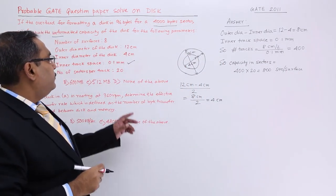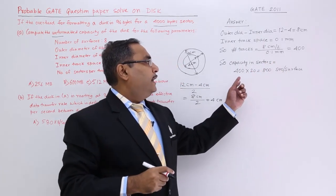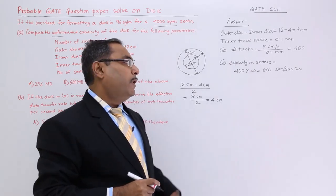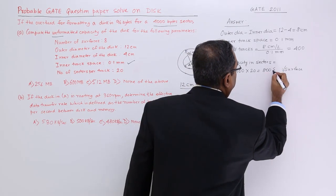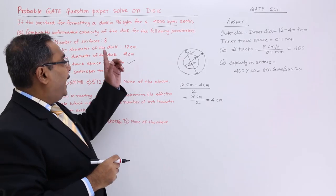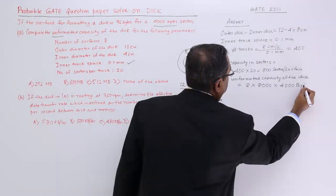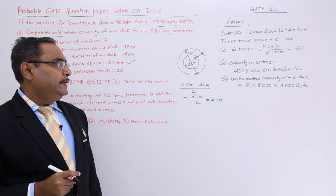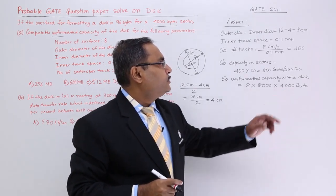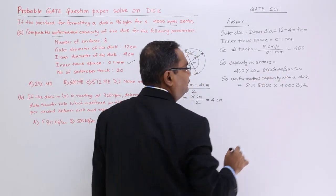It is given that the number of sectors per track is 20. So: number of sectors per surface = 400 tracks × 20 sectors per track = 8000 sectors per surface. The unformatted capacity of the disk = 8 surfaces × 8000 sectors per surface × 4000 bytes per sector.